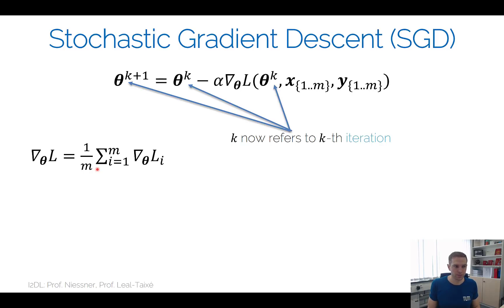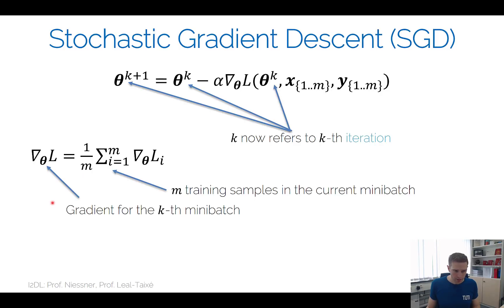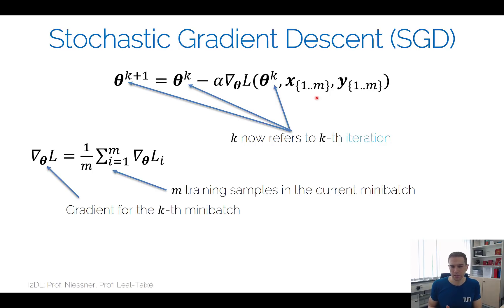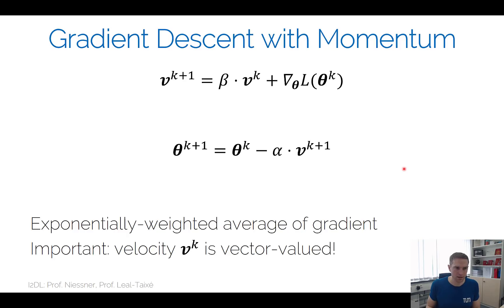This k refers to the kth iteration, and we need training-set-size divided by m iterations to see every training sample once. We subdivide our training set and do many more iterations. The idea is that if you take a large enough, representative m, the approximated gradient is a good estimate of the global gradient. We also introduced variations of SGD, the last being momentum.